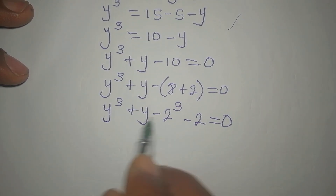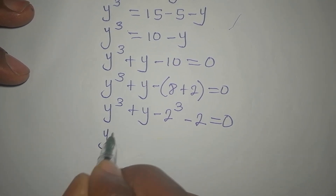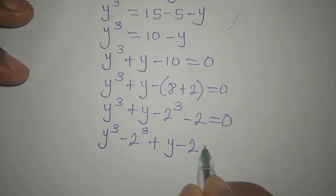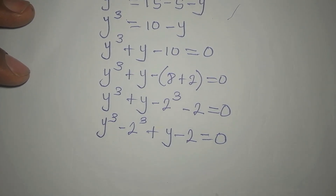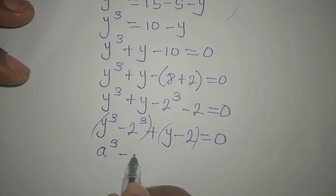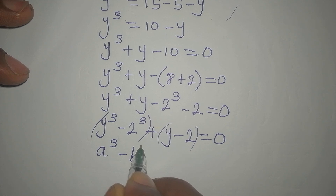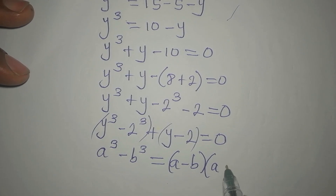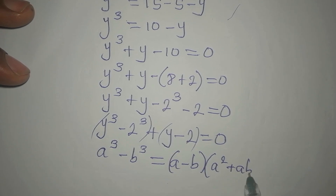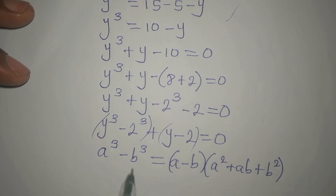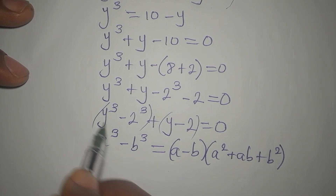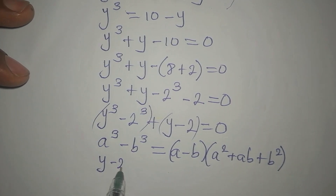Now let us regroup: Y³ minus 2³, plus Y minus 2, equals zero. We know that A³ minus B³ equals (A minus B)(A² plus AB plus B²). Here A is Y and B is 2, so Y³ minus 2³ gives us the factor (Y minus 2).